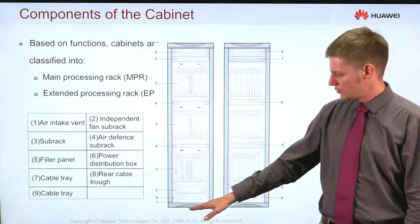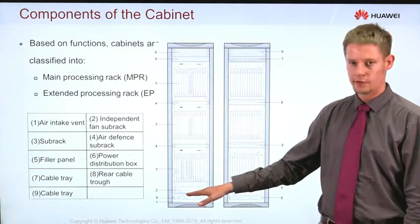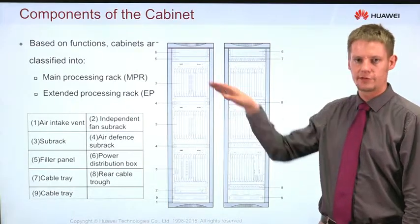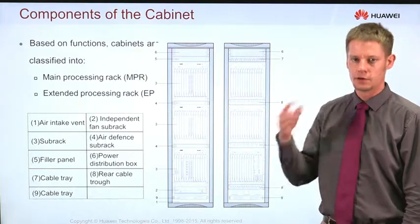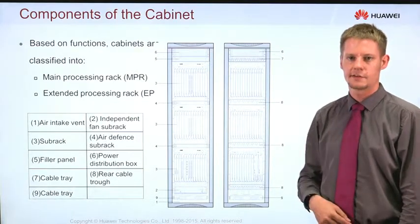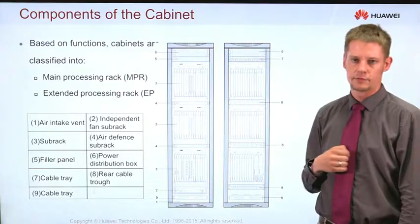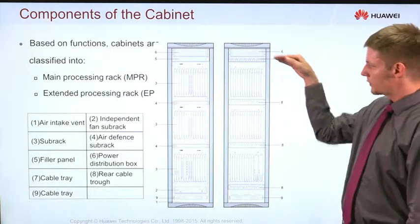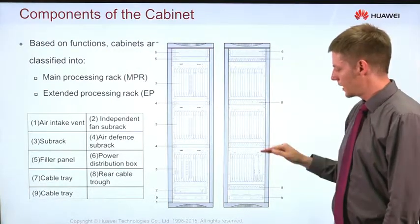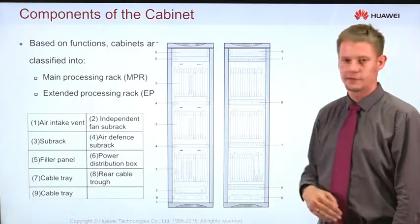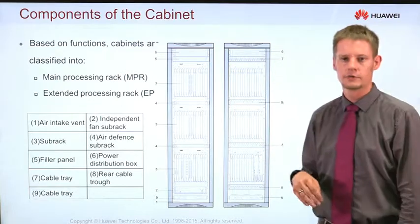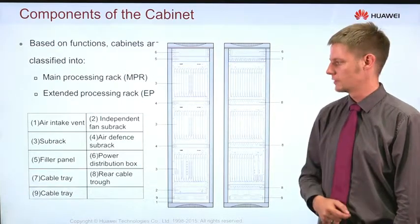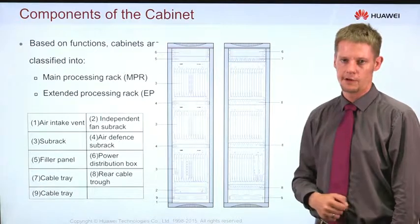Down here we have the air inlet and an independent fan. The independent fan together with the subrack fans maintains the cooling inside the system, and on top of the rack we have the power distribution box. On the rear side we have some cabling devices, cabling trays and cabling troughs, because all of the interface cabling is done on the back side.